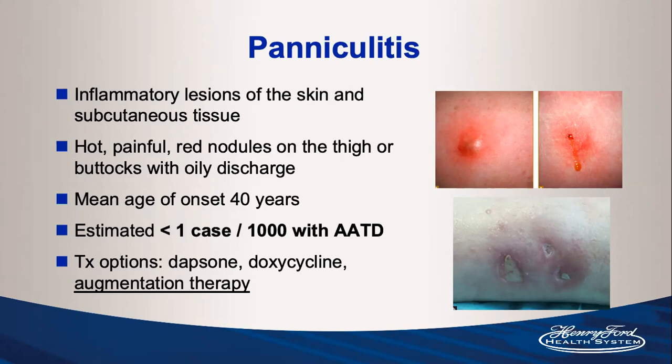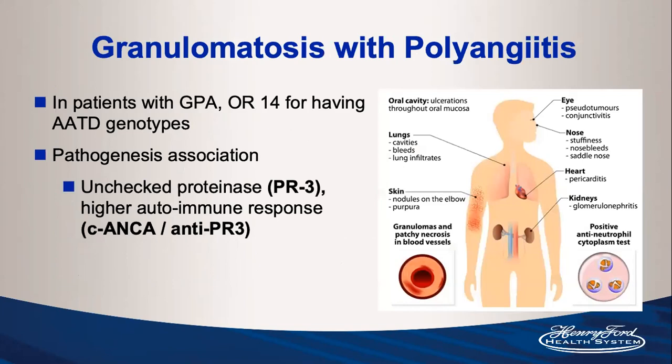Treatment options for panniculitis include dapsone, doxycycline, and augmentation therapy, which has been very successful for this condition. For GPA, the odds ratio for having an alpha-1 antitrypsin deficiency genotype is 14 compared to patients without GPA. The pathogenic association is that in the absence of alpha-1 antitrypsin there is unchecked proteinase 3, leading to higher likelihood of an autoimmune response from anti-PR3 or c-ANCA proteins.